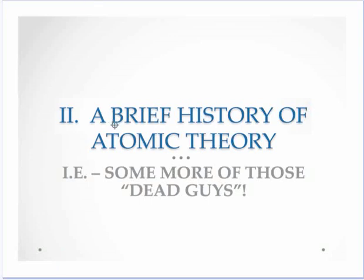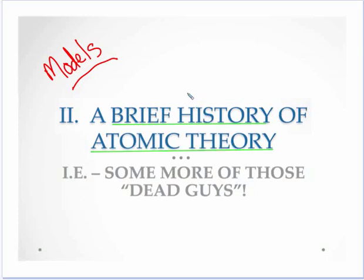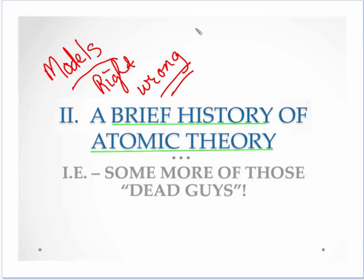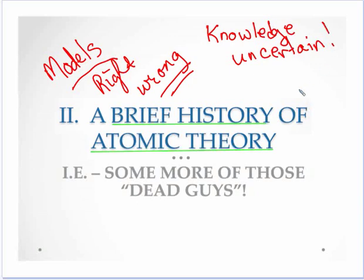Instead we're going to run through a brief history of atomic theory, focusing on the models and how scientists tried to model their understanding of the atom — where they were right and where they went wrong. Going wrong in science is not necessarily a bad thing; it can lead to good results. Our knowledge of truth is uncertain, so we continually refine our models. We'll be looking at a few more 'dead guy' results that you do need to memorize.